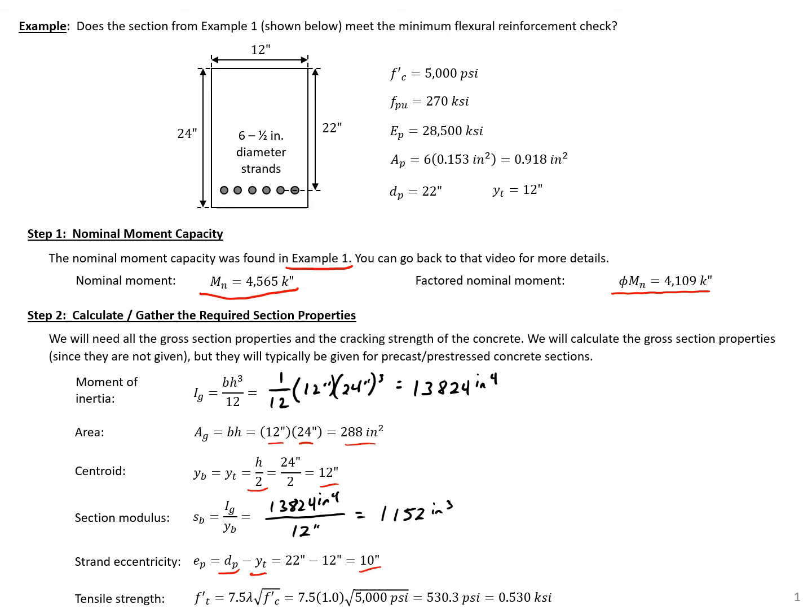And then finally, the tensile strength of our concrete, 7.5 times 1.0 for normal weight concrete times the square root of 5,000 psi will give us 530 psi or 0.53 ksi.